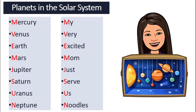You can make up your own sentence. The funnier it is, the easier you will be able to remember. It is very important that you can remember the order of the planets in our solar system. At this stage, a lot of questions will require you to know your planets well, especially the order of the planets.